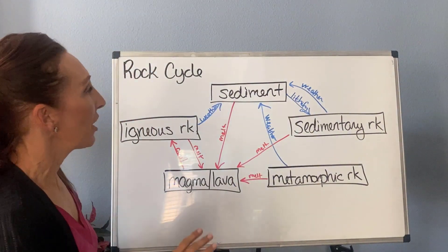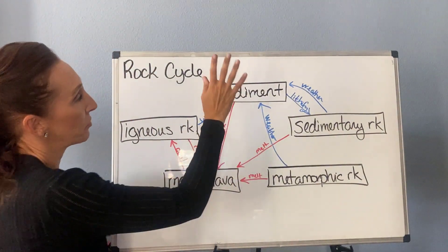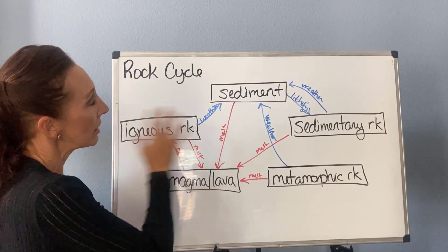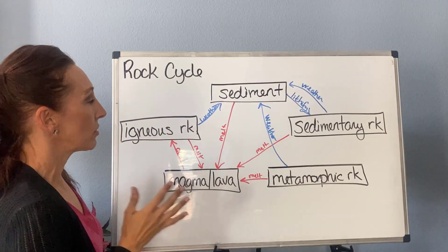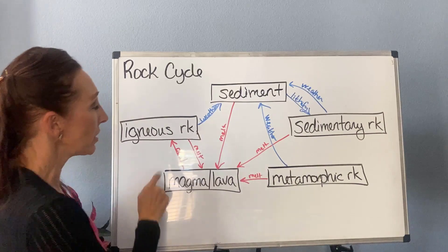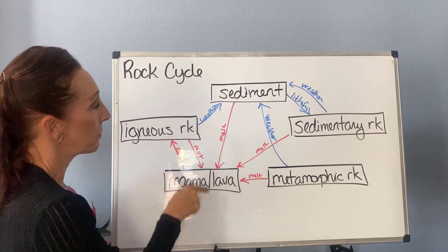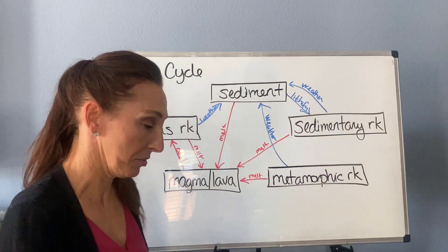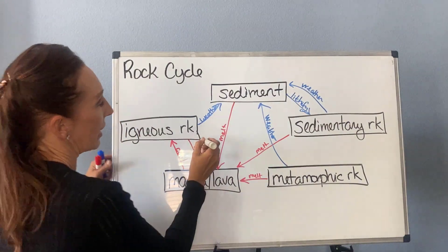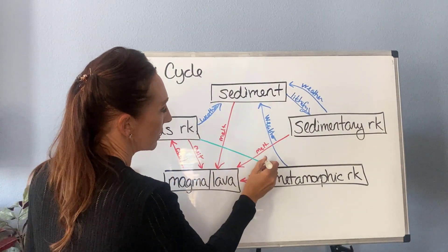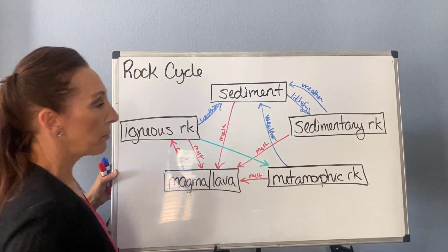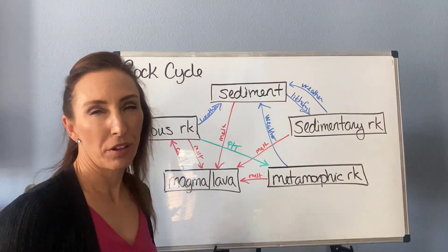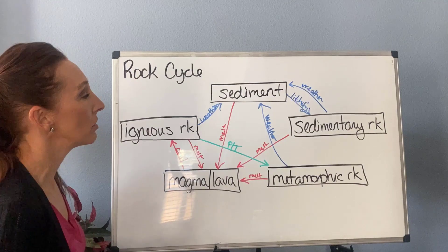Now we've dealt with sediment. For igneous rock, besides breaking it apart by weathering or melting it, we can also metamorphose it. So we draw a line to metamorphic rock and label it 'PT' for pressure and temperature, though fluids may also be involved.